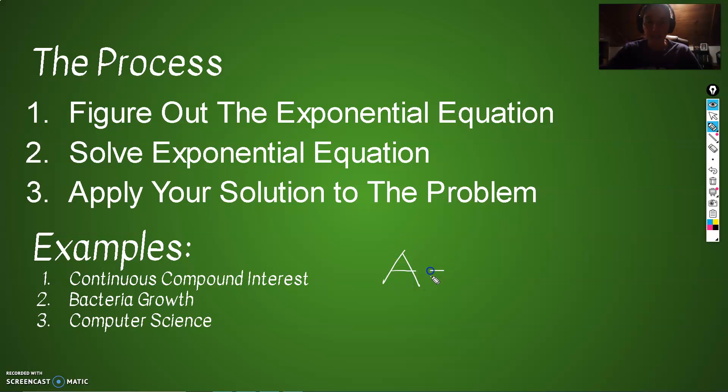Every single exponential that you solve is going to be in this form, where A we'll call amount, P initial amount, initial population, principle, this will be called like eight different things. So we'll say initial, because I like that word best. E is the number E. R is the rate. This will also be known as growth constant. And T usually is always T. T is time.